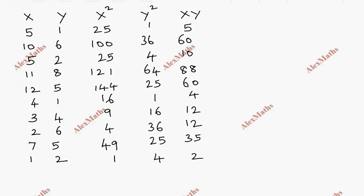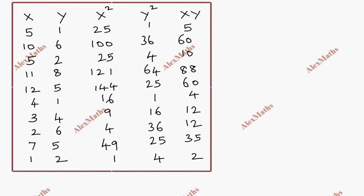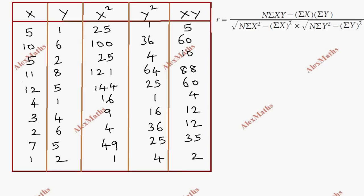From the completed table, you get the summation values needed for the formula. Capital N — the number of data points — is 1, 2, 3, 4, 5, 6, 7, 8, 9, 10, so N equals 10. The total for sigma xy is 288. Remember: sigma x and sigma y values will come next.